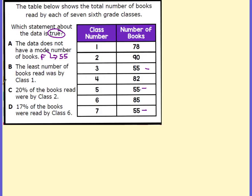Moving on to B: the least number of books read was by class one. Class one read 78 books. Are there any books less than 78? Yes — the 55, right, the mode. So this one is false.